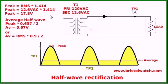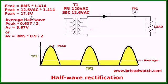Your formulas are as follows. Peak is the highest positive point. That's RMS, which over here is 12.6 volts AC, times 1.414. And that's going to come out to about 18 volts.